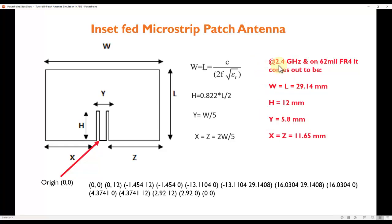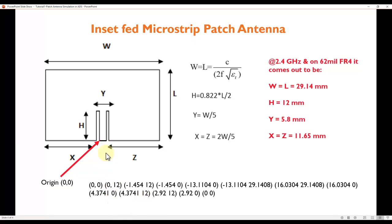We've done a sample calculation for 2.4 GHz using a 62-mil FR4 substrate, which is a very common material. Applying these formulas for 2.4 GHz resonant frequency, we arrive at the patch dimensions. From these parameters it's straightforward to calculate the x and y coordinates of all vertex points, keeping one point as the origin.